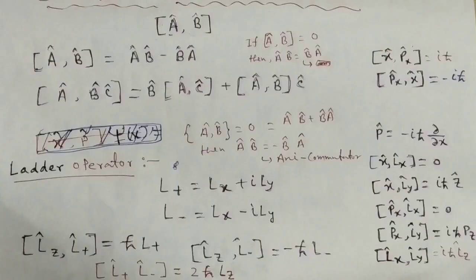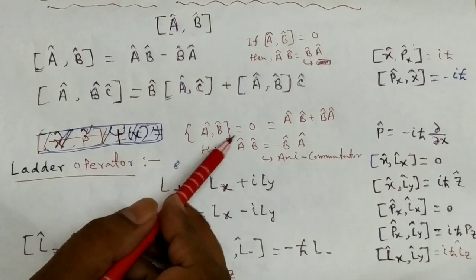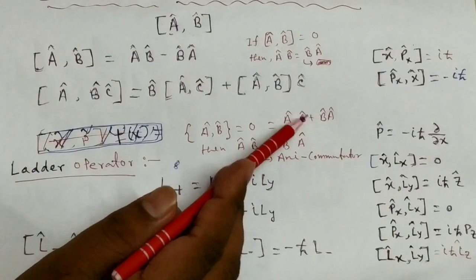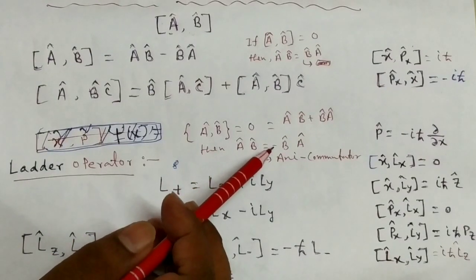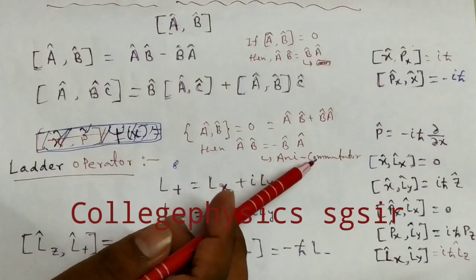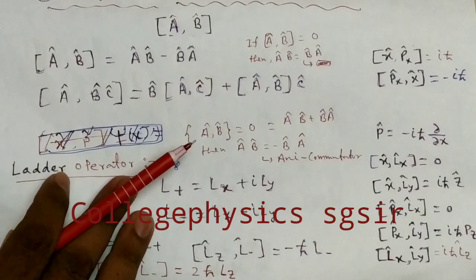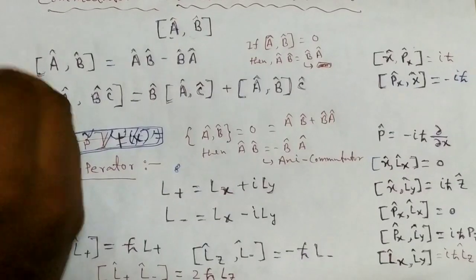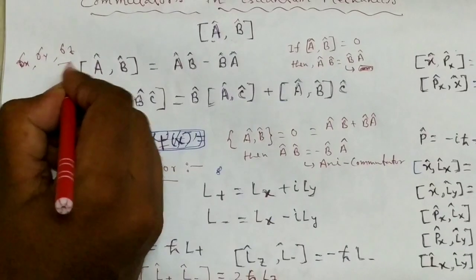For the anti-commutator, the curly bracket {A_cap, B_cap} is equal to A_cap * B_cap plus B_cap * A_cap. If this equals zero, then A_cap * B_cap = minus B_cap * A_cap. This is the anti-commutator. An example is Pauli matrices like sigma_x, sigma_y, sigma_z.